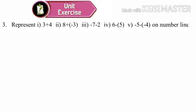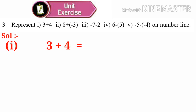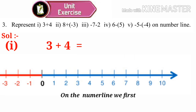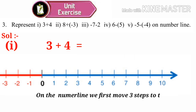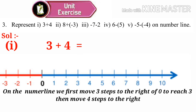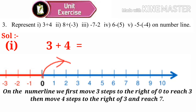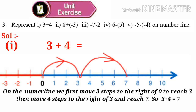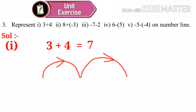Third problem: represent on a number line. Solution 1: 3 plus 4 is equal to how much? Take a number line. On the number line, we first move 3 steps to the right of 0 to reach 3, and then move 4 steps to the right of 3 and reach 7. So 3 plus 4 is equal to 7.